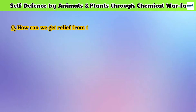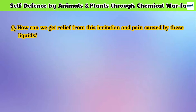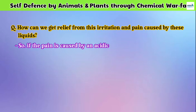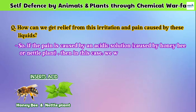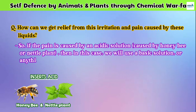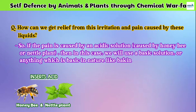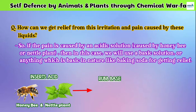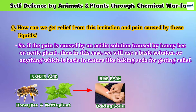So now the question arises: how can we get relief from this irritation and pain caused by these liquids? So if the pain is caused by an acidic solution — meaning in the case of honey bee or nettle plant stings, which insert formic acid into our body — then in this case, we will use a basic solution or anything which is basic in nature, like baking soda.